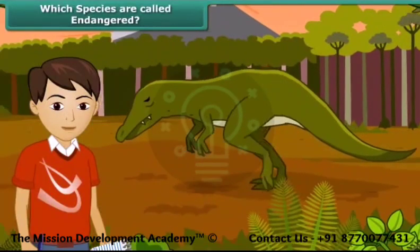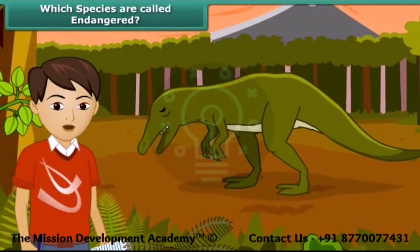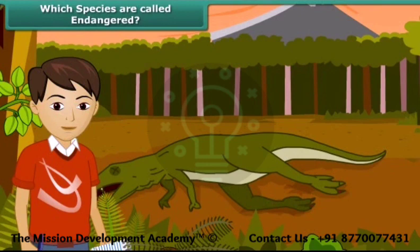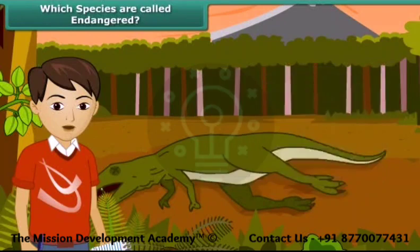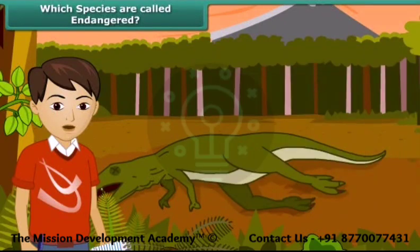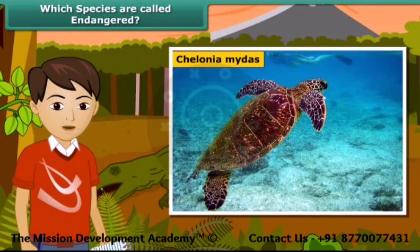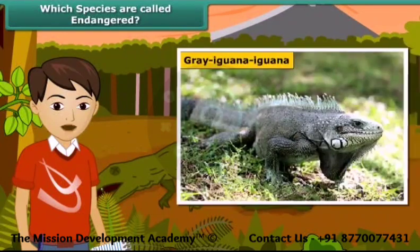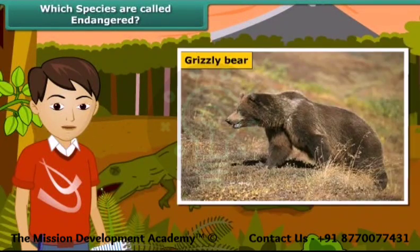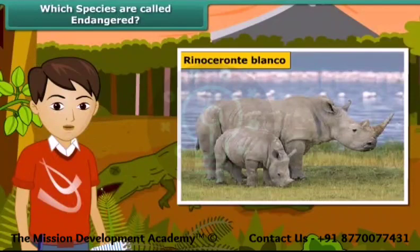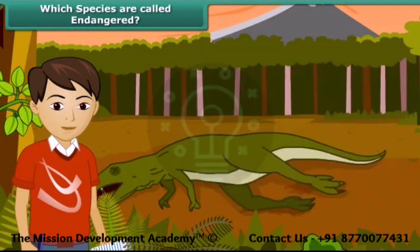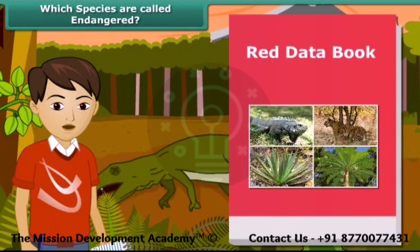You must have heard about dinosaurs — they existed hundreds of years ago but are extinct now. Many animals and plants have become extinct, whereas some are on the verge of extinction. Species whose numbers are diminishing to a level that they might face extinction are known as endangered species. The Red Data Book is the source book which keeps a record of all endangered animals and plants.